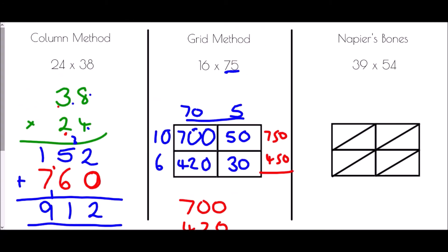And then Napier's bones for 39 times 54. We don't need to worry about extra zeros — just write them exactly as they come: 3, 9 across the top and 5, 4 down the side. Fill in each box: 3 times 5 is 15, so 1 and 5; 9 times 5 is 45, so 4 and 5; 3 times 4 is 12, so 1 and 2; and 9 times 4 is 36, so 3 and 6.